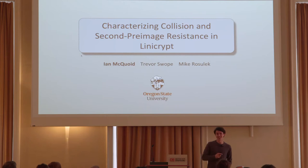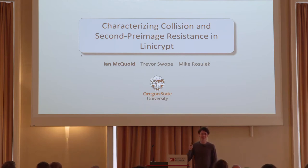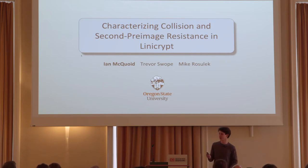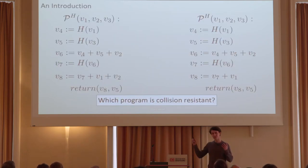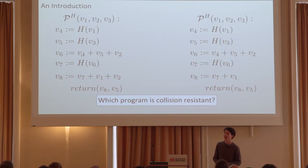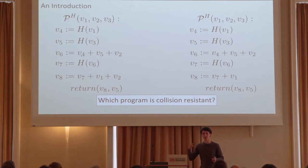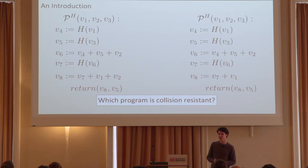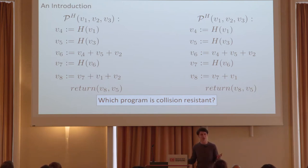What we're going to be talking about is characterizing certain security properties for a class of algorithms. Up on the screen you see two different lineecrypt programs. It turns out that one of these two programs is collision resistant whereas the other program fails to even be second pre-image resistant, and how do we tell the difference between these two? That's what we're going to be talking about today.